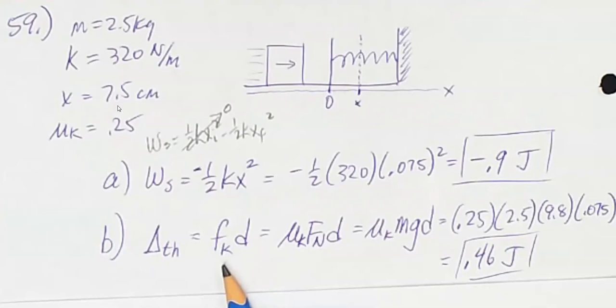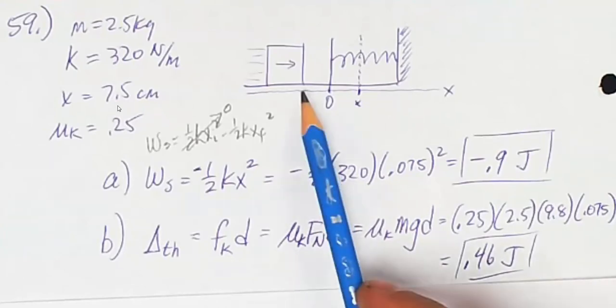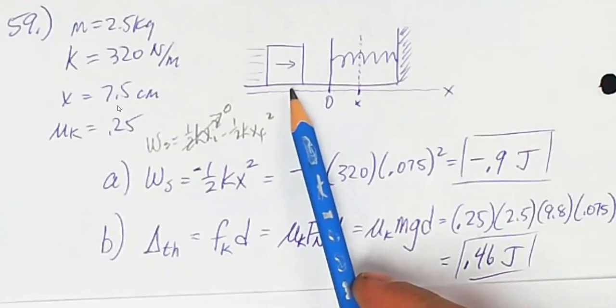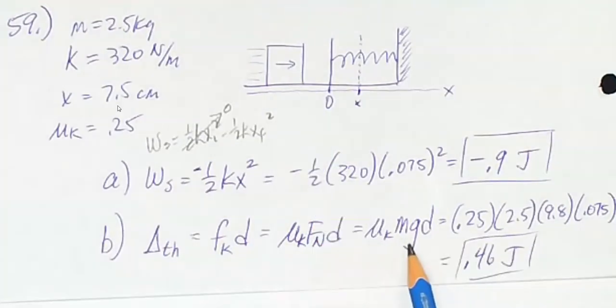Therefore, the work done by a constant force is just force times distance. Kinetic friction is mu times the normal force. And for a block sliding on a horizontal surface, the normal force is equal to the weight. Now I can plug in all those values and solve for the change in thermal energy 0.46 joules. Positive, of course.